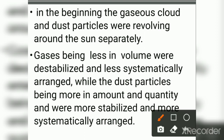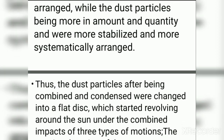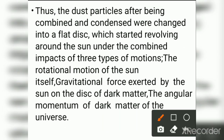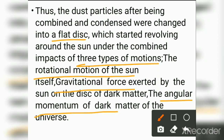In the beginning, gaseous clouds and dust particles were revolving around the Sun separately. Gases, being less in volume, were destabilized and less systematically arranged, while the dust particles, being greater in quantity, were more stabilized and more systematically arranged. Thus the dust particles, after being combined and condensed, changed into a flat disk which started revolving around the Sun under the combined impacts of three types of motion: the rotational motion of the Sun, the gravitational force exerted by the Sun on the disk of dark matter, and the angular momentum of the disk.